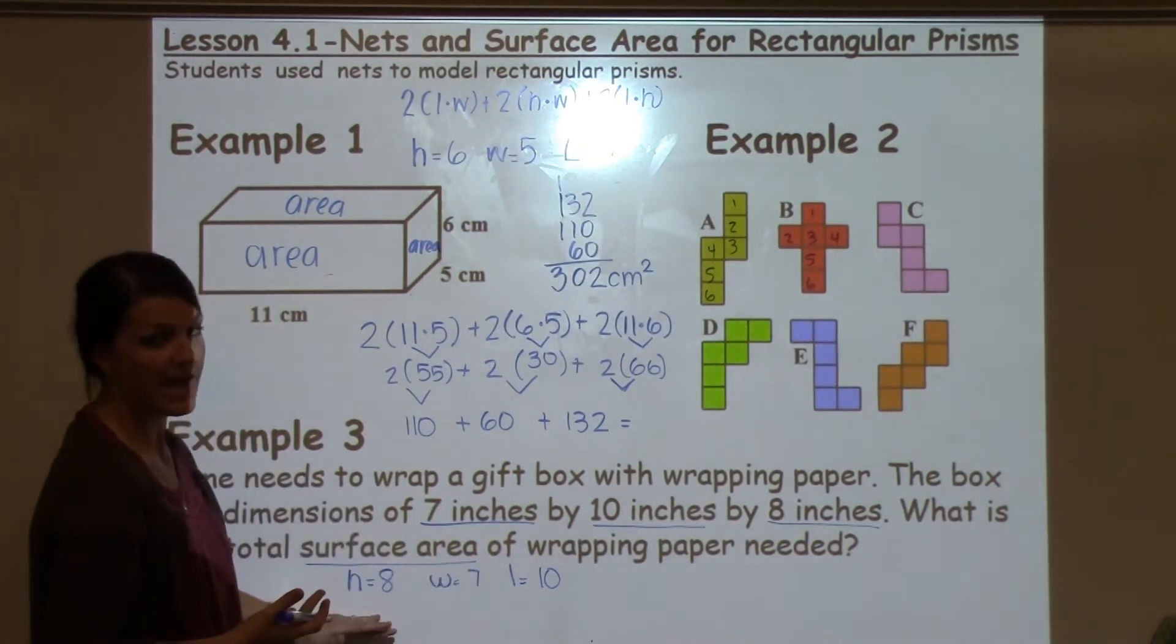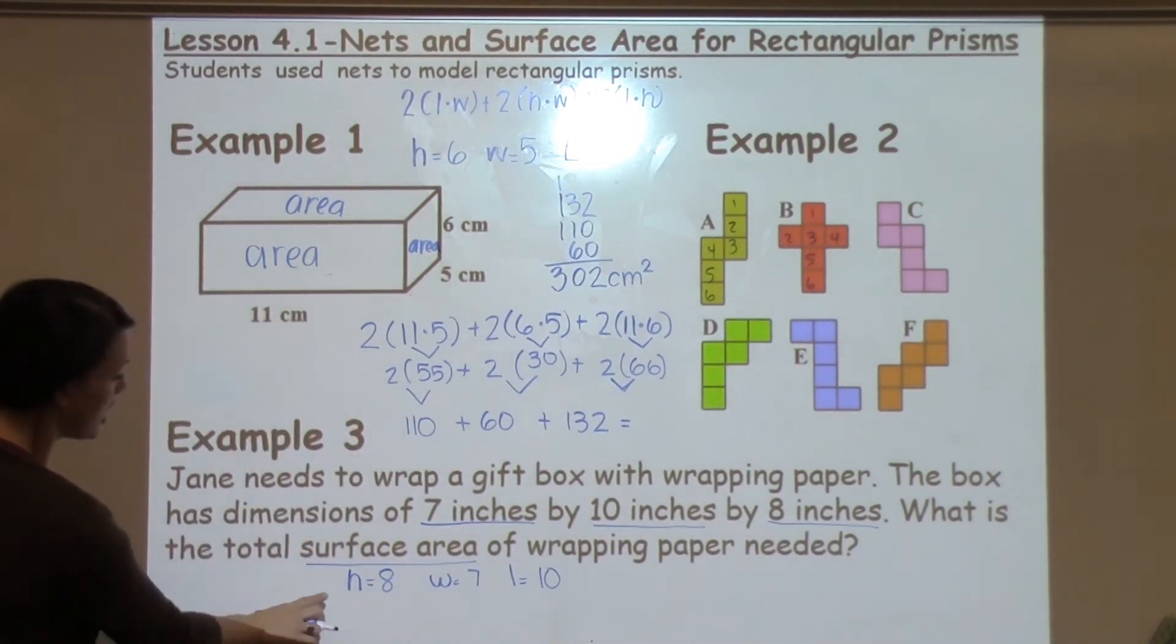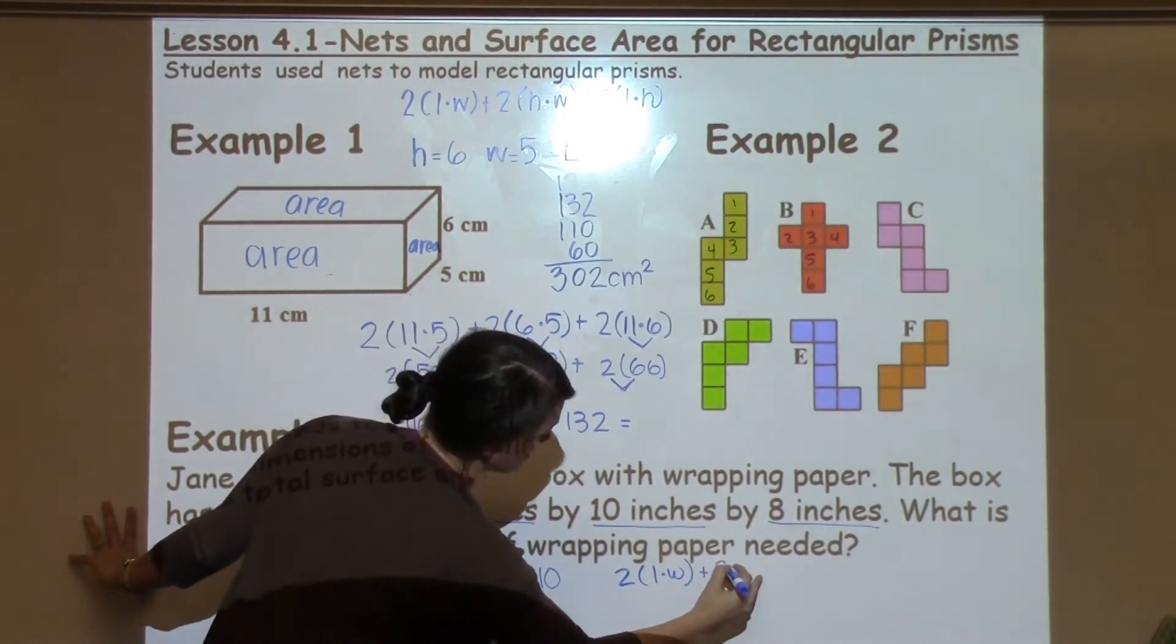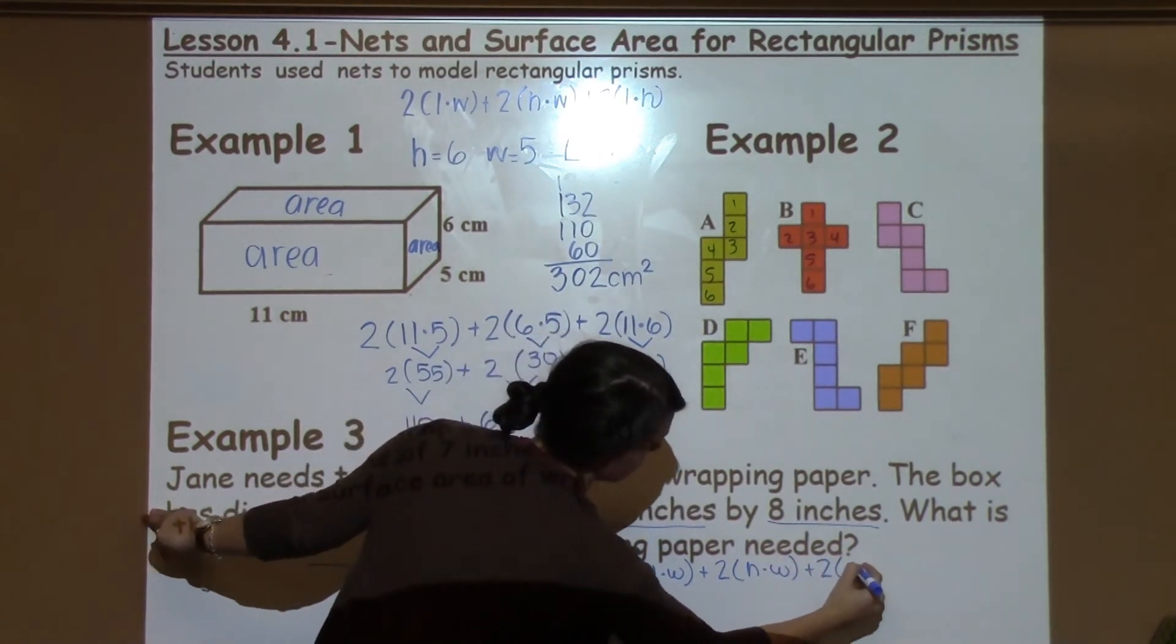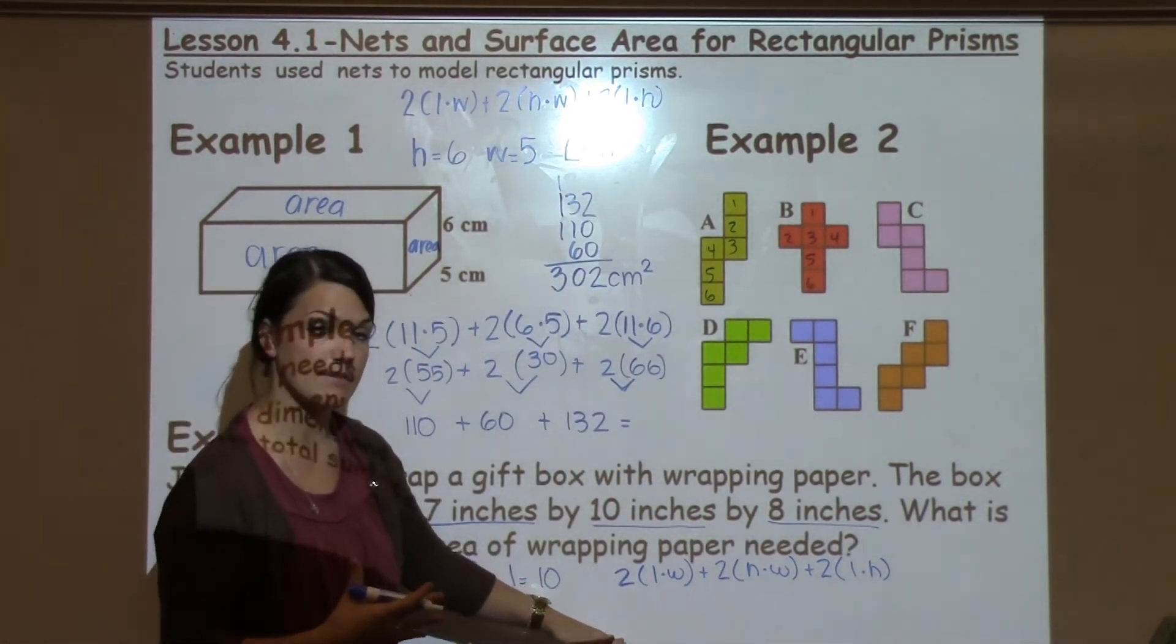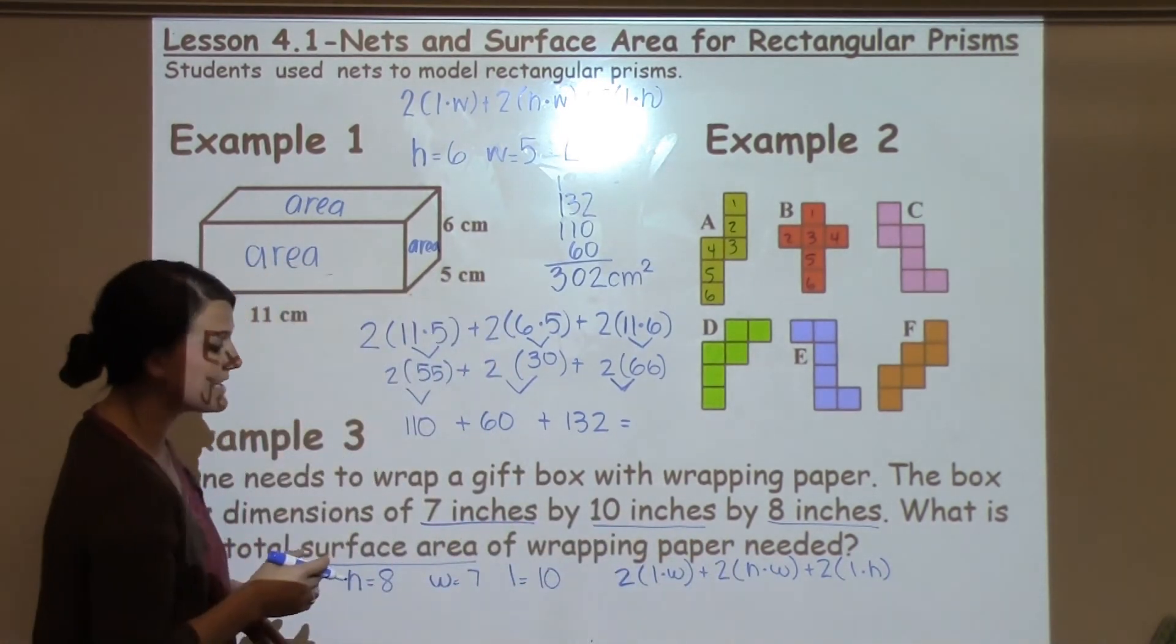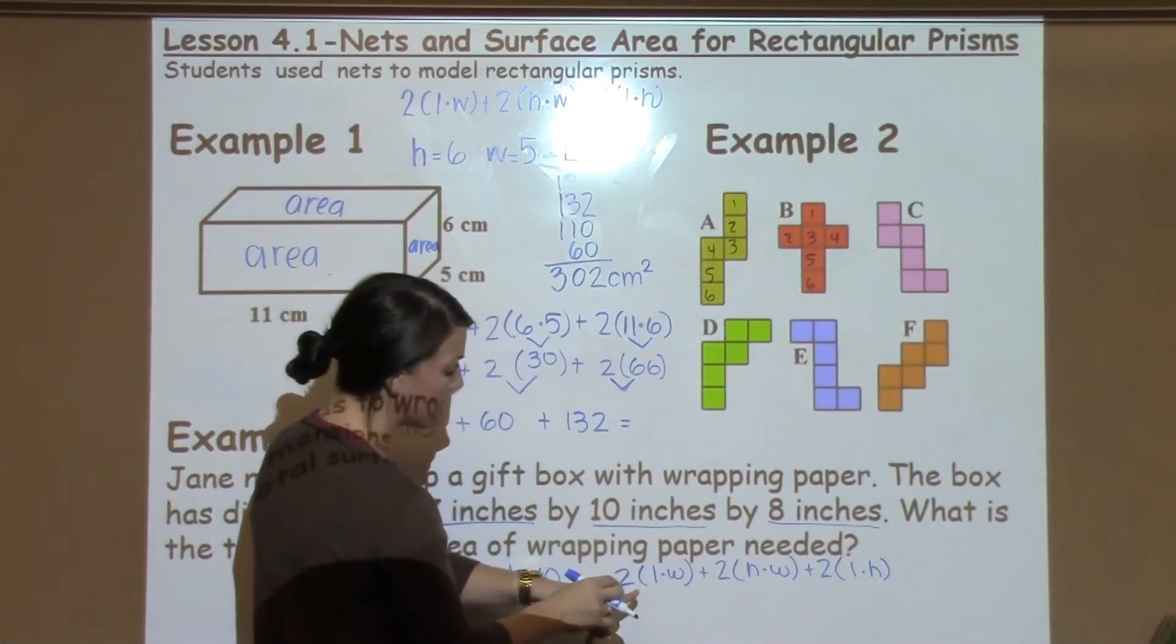Again, even if your student had 10 as the height, they would still get the same answer because with multiplication and addition, the order doesn't really matter. Alright, so now I'm going to plug it into my original formula, which is 2 times length times width, plus 2 times height times width, plus 2 times length times height. And again, going back to that same thought about how order doesn't really matter with multiplication and addition, if your student did length times height here first and length times width here instead, that's okay. They're going to get the same answer as long as they are including all three dimensions twice.